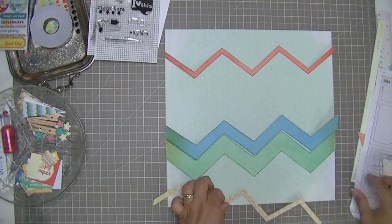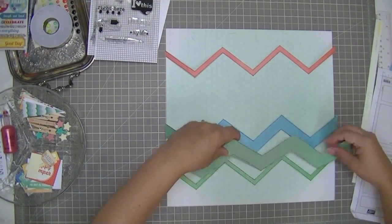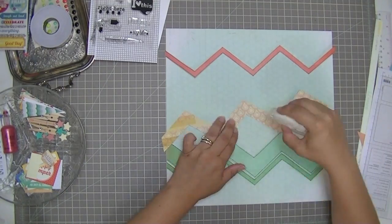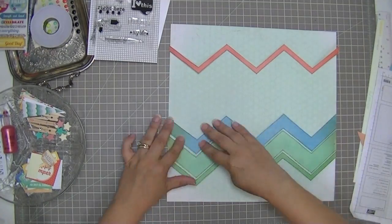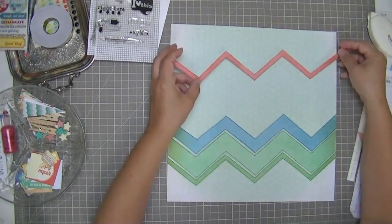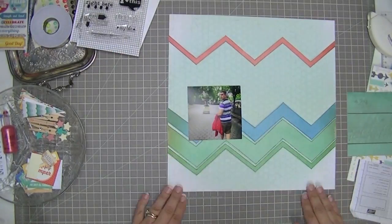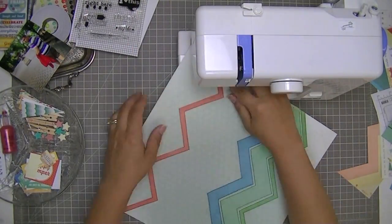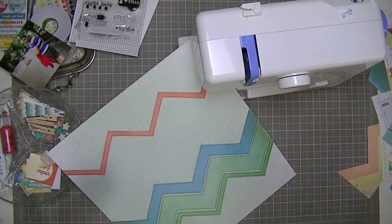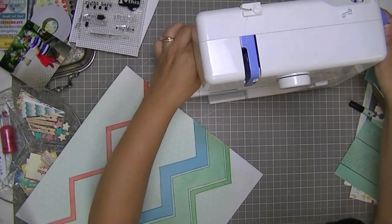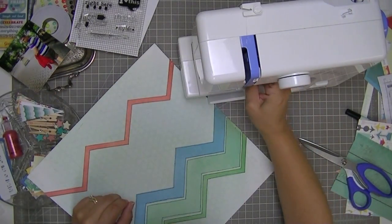But for now I'm using temporary adhesive to adhere those chevrons and I'm using the grid on my work surface to make sure that I'm lining it up properly. Sorry I seem to be losing my voice here. So I want to float the salmon colored one up a little bit. And now I'm going to have a great deal of difficulty with my sewing machine here. You're going to see some of it and then I'm going to edit out some of it because it's very long.